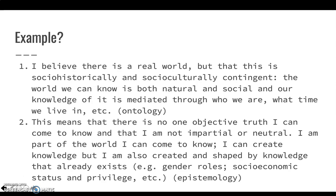So this means, in terms of how we can come to know the world, that I can't go looking for one objective truth. There are no pre-existing facts out there that if I design the right kind of study I can just come to know as the truth. And I, as a researcher, cannot be impartial or neutral, because I am part of the socio-historical and socio-cultural context that I'm doing my research in. So I can create knowledge, but I also have to be very aware of particular kinds of socio-historical and socio-cultural context — gender, socio-economic status, and so on. I can't just come to know anything, but I also can't come at the world as if it's already existing objectively and all I have to do is find out about it.